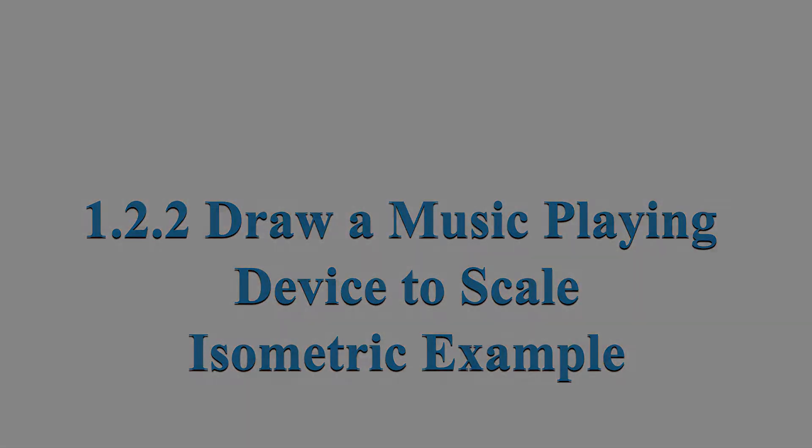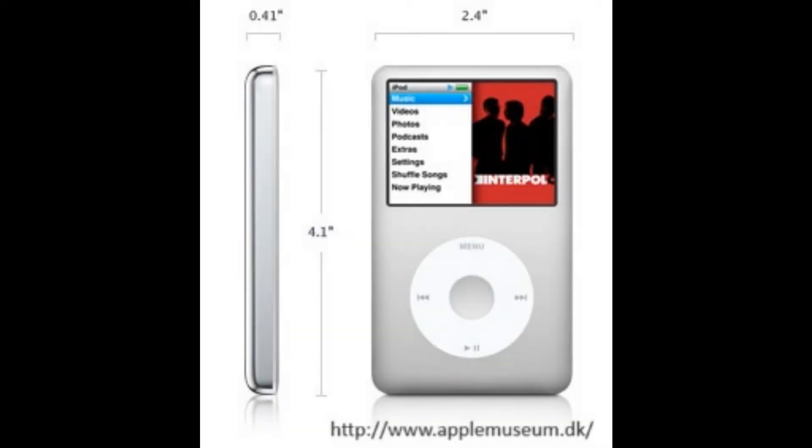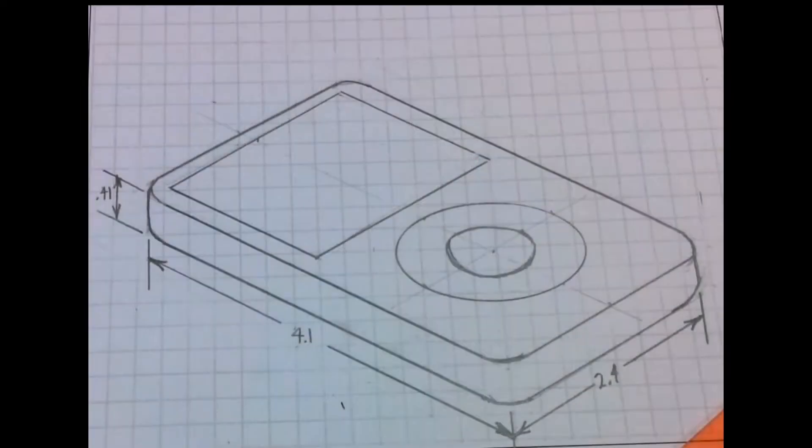Here we're going to work on drawing an Apple iPod like I discussed earlier, but I'm going to draw an isometric view instead this time. Isometric view is often used when we want to show something in 3D on 2D paper.